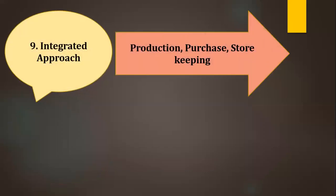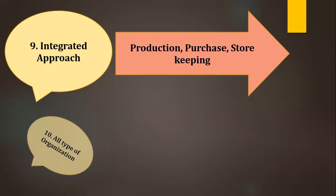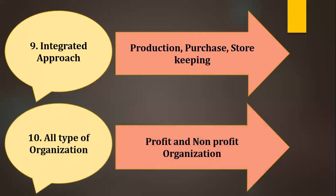The next feature is integrated approach. Marketing is a combination of production, purchase, and store-keeping. It has to produce the goods, it has to purchase the materials, and it has to maintain the stores and materials — an integrated overall approach. The next feature is that marketing includes both profit and non-profit organizations.